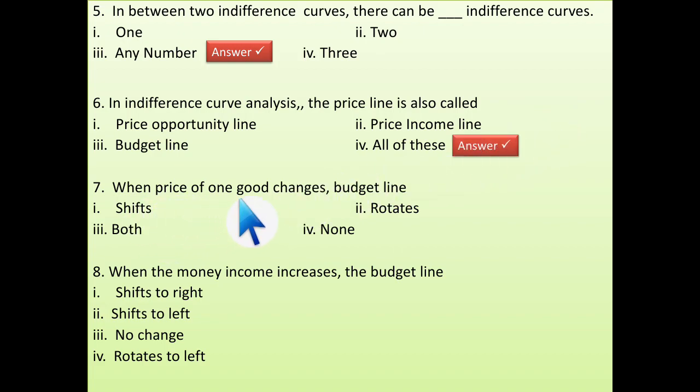Next, when the price of one good changes, the budget line, well, when price changes, budget line rotates. But when money income changes, then it will shift.